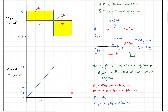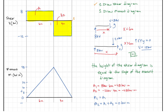Using the height-equals-slope relationship: we have a negative shear height of minus 12, so we have a negative slope in the moment diagram. For every meter we move right, the moment drops 12 kilonewtons — going from 48 down to 36, to 24, to 12, to zero over 4 meters. Positive shear height gives a positive slope; negative shear height gives a negative slope.